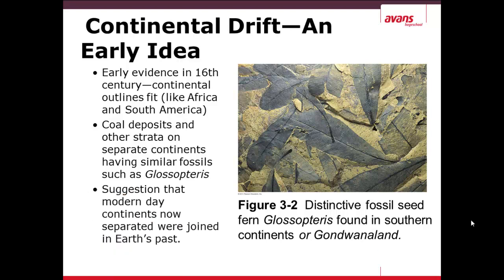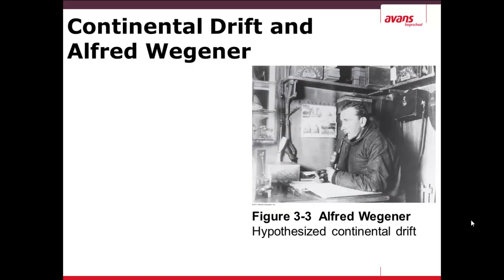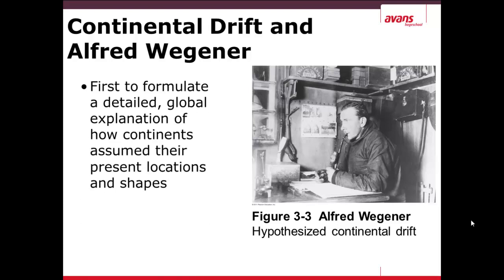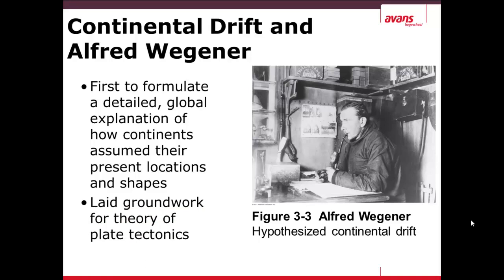The suggestion is that the modern-day continents, now separated, were joined in Earth's past. So at this time we have seven continents, and the suggestion is that many years ago all of these continents were together in one supercontinent. The original hypothesis of continental drift was proposed by Alfred Wegener. He was the first to formulate a detailed global explanation of how these different continents in their present shapes fit together, and he laid the groundwork for the theory of plate tectonics, although at this time he came up with the idea that continents drifted, not plate tectonics itself.